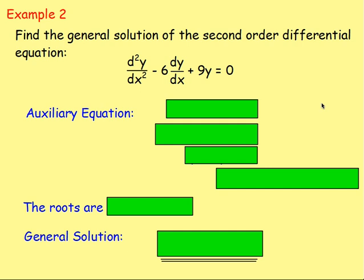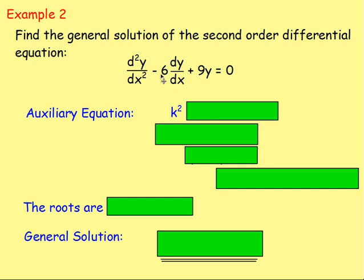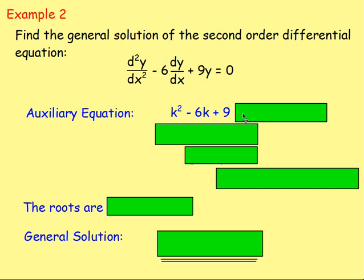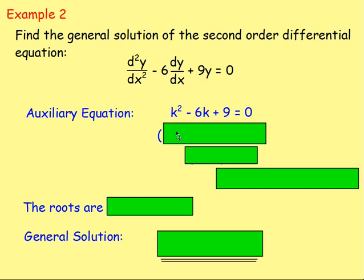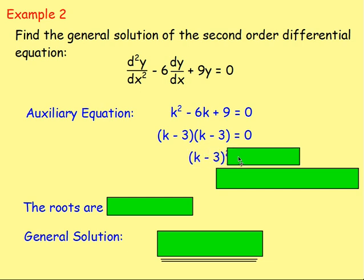Example 2: find the general solution of the second order differential equation d²y/dx² minus 6 dy/dx plus 9y equals 0. We start by finding the auxiliary equation and then solving it. Taking the coefficients: 1 for d²y/dx² gives 1k², minus 6 for dy/dx gives minus 6k, and plus 9 for y gives plus 9. That equals 0. Factorising gives (k − 3)(k − 3), which means (k − 3)².